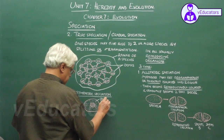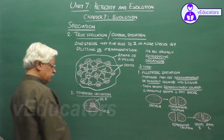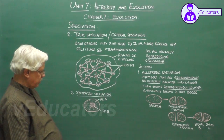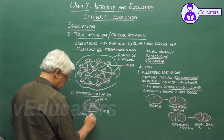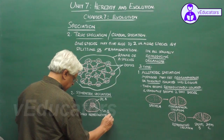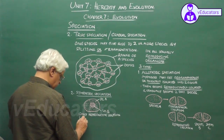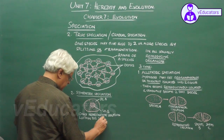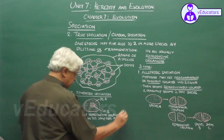This is species A, and this is the newly formed species B. Here, only reproductive isolation within the same geographical range results in sympatric speciation.